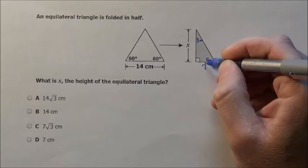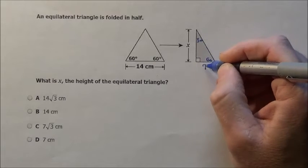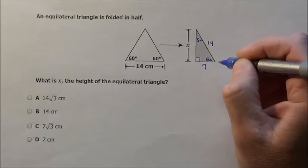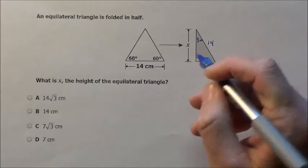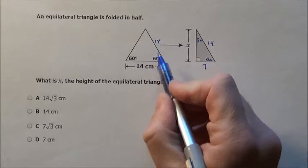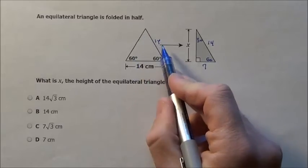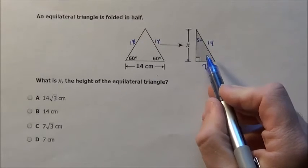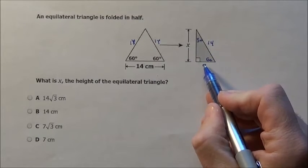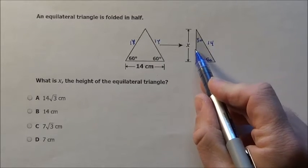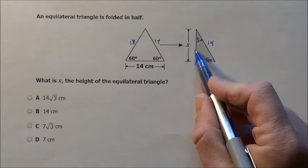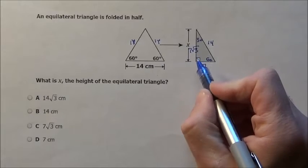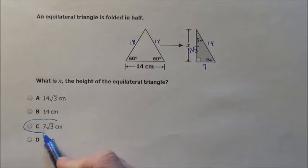If you remember, what happens is this short side — everything is based off of it. The hypotenuse is twice as big, meaning that hypotenuse would be 14. Now we already know that because all sides of the 60-60-60 equilateral triangle are the same, so all those sides are 14 anyway. But what we remember is: everything is based off of the short side, hypotenuse is twice as big, the long side is root 3 times as big. So this guy is 7 times square root of 3, which is option C.